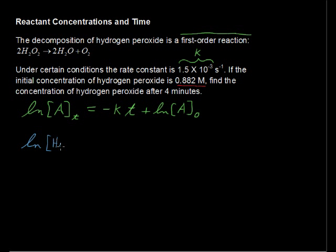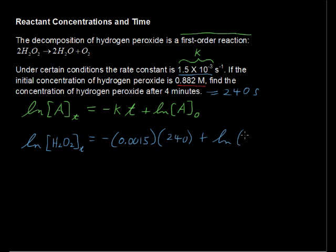Natural log of H2O2 at some given time t equals negative 0.0015—I just took this number and put it into standard notation—multiplied by t in seconds. 4 minutes equals 240 seconds, so I'll plug in 240 there. Plus the natural log of the initial concentration, that is 0.882.